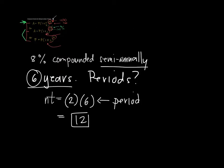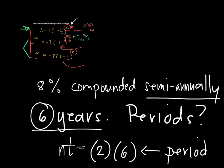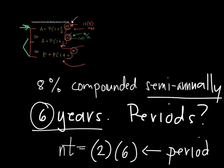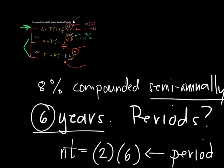Now, there are instances in which the given are different. So, instead of having 8% and the number of years, sometimes you also have the future value and the present value.